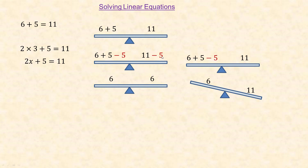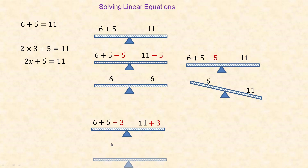Subtracting isn't the only thing you can do — you can actually do any arithmetic operation. For example, with 6 plus 5 on one side and 11 on the other, if I add 3 to both sides, that's 11 plus 3 equals 14 on the left and 11 plus 3 equals 14 on the right. I did the same thing to both sides, so it's still balanced.